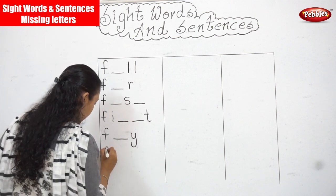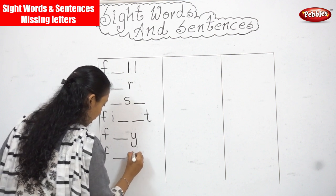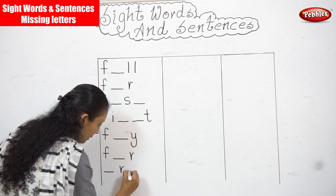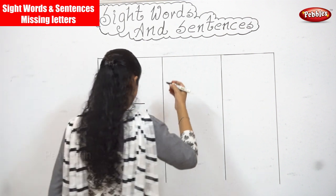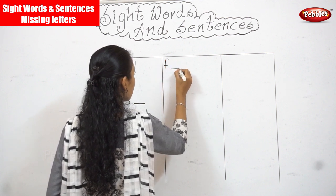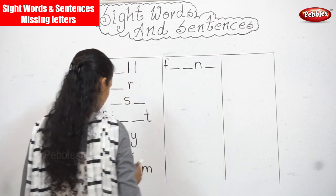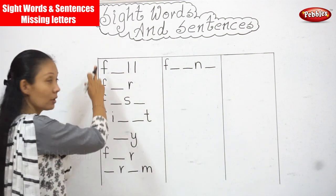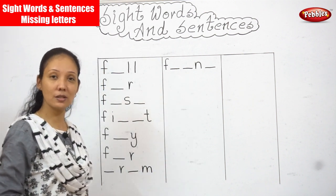Next, F-dash-Y. Next, F-dash-R-dash-R. Next, dash-R-dash-M. Next, F-dash-dash-N. Next, F-dash-dash-N. Next, F-dash-N. Now these all start with the letter F. Now we will write some words which begin with G also, that we learned already today, isn't it?